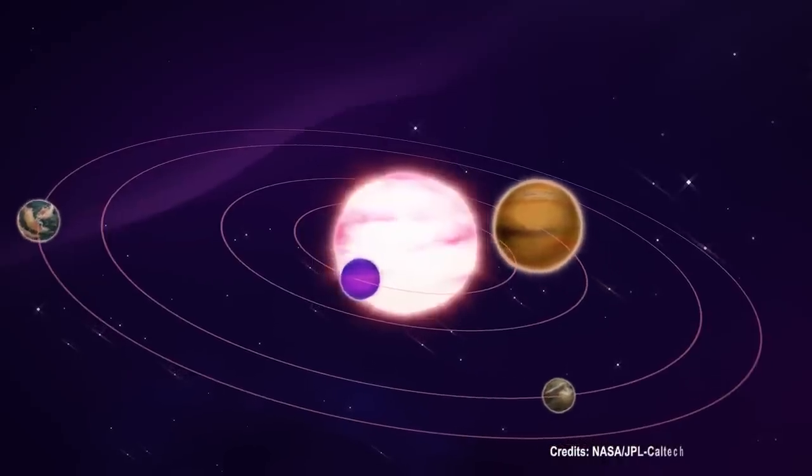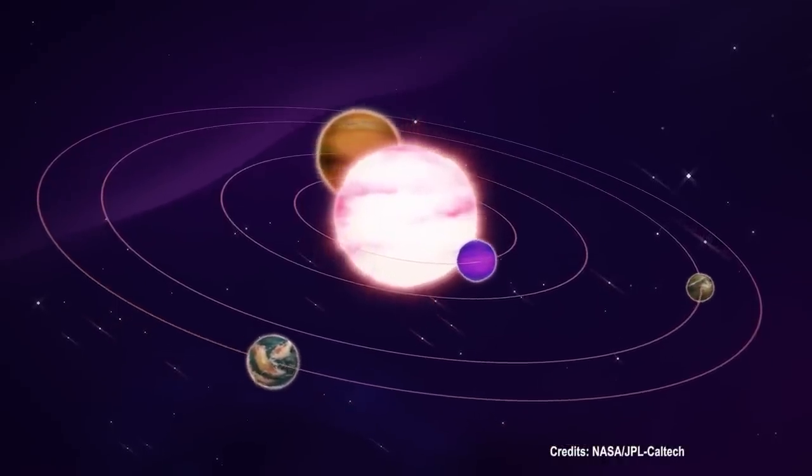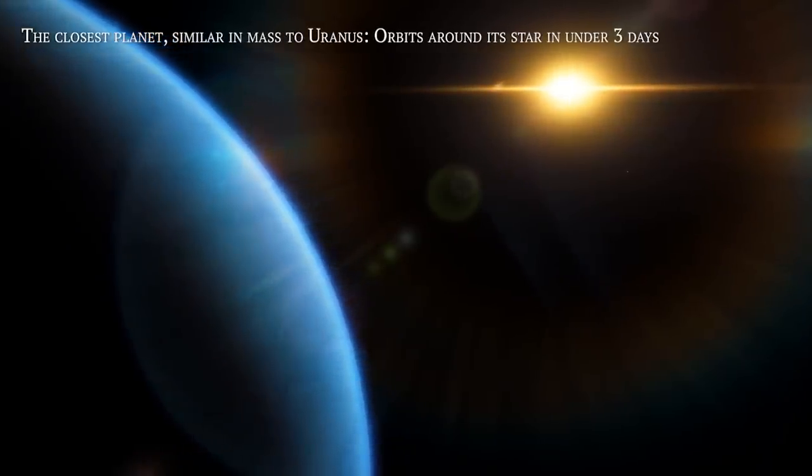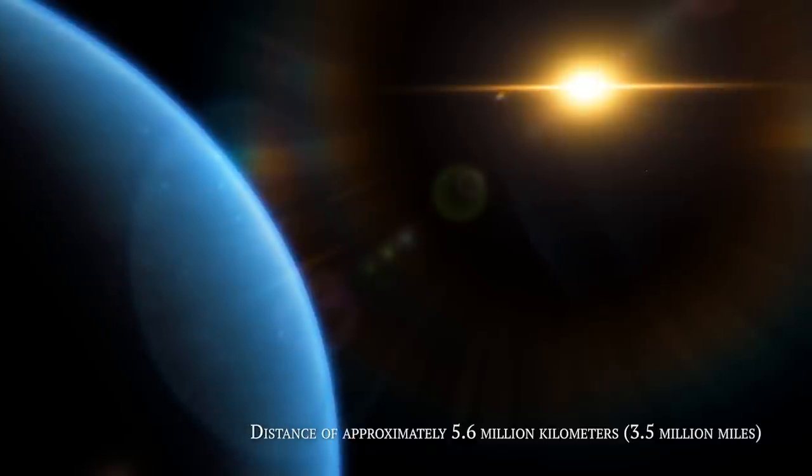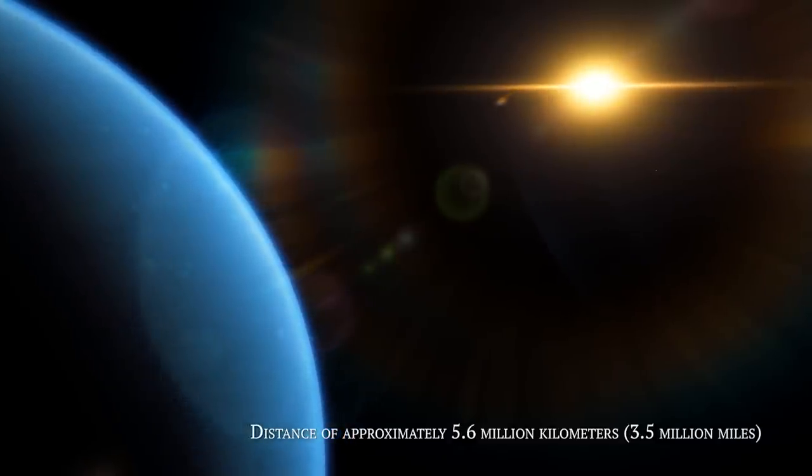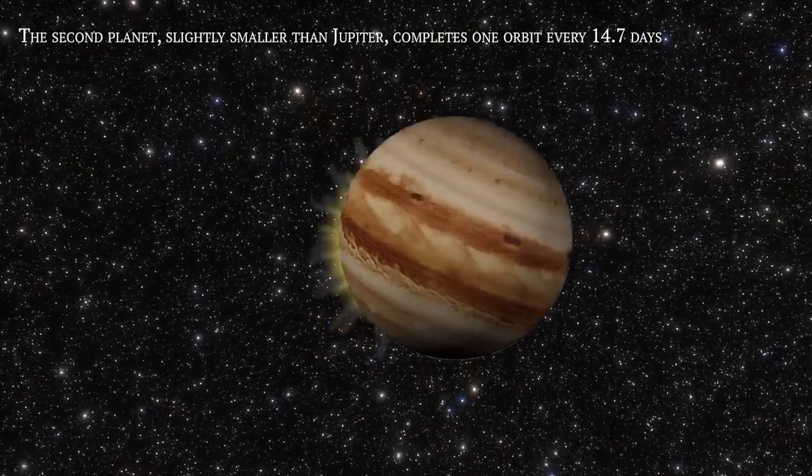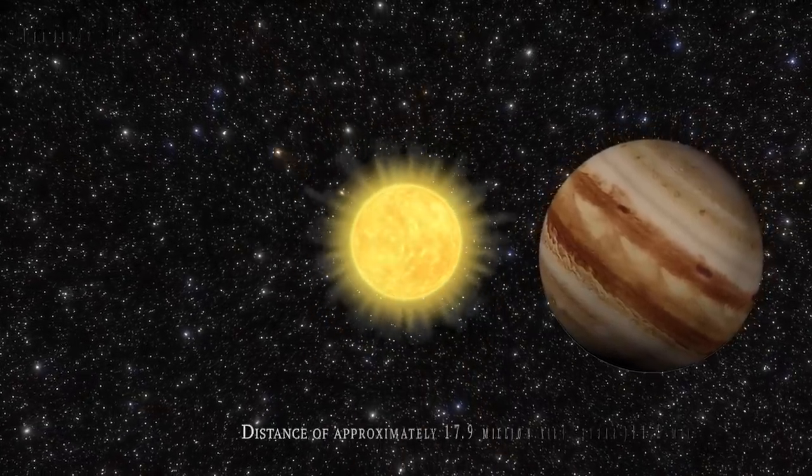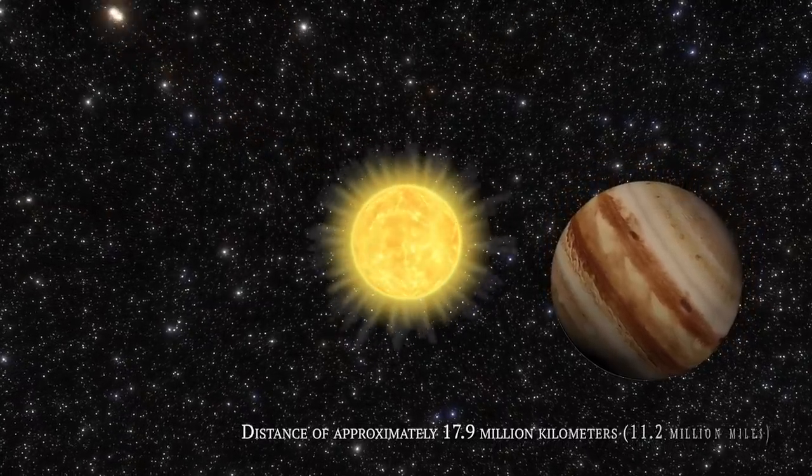The inner four planets of 55 Cancri are positioned closer to their star than Earth is to the Sun. The closest planet, similar in mass to Uranus, orbits around its star in under three days, at a distance of approximately 5.6 million kilometers or 3.5 million miles. The second planet, slightly smaller than Jupiter, completes one orbit every 14.7 days, circling at a distance of approximately 17.9 million kilometers or 11.2 million miles.